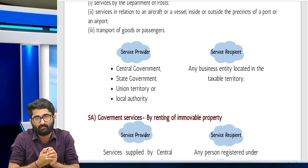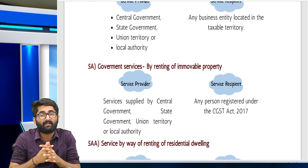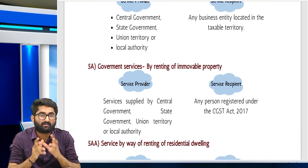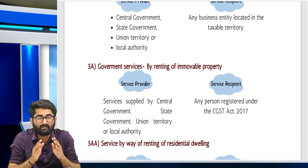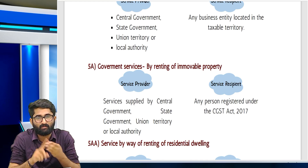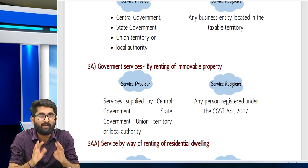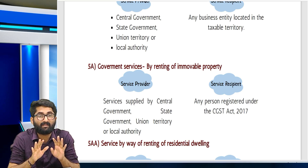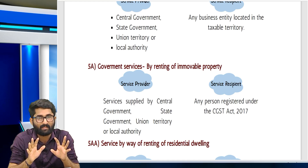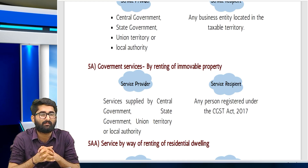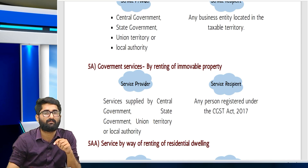Government renting of immovable property: supplier is central government, state government, union territory or local authority; service recipient is any person registered under the CGST Act. There is one amendment: immovable property given by Indian Railways — RCM is not applicable, meaning FCM is applicable for that. Please watch the amendment videos for details.